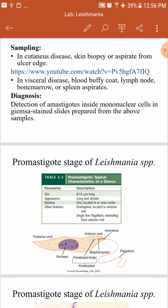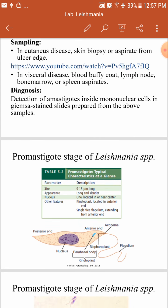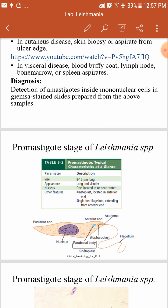However, spleen aspirate is not the best option. If we take an aspirate from the spleen of a patient with Leishmania donovani, we increase the risk of splenic rupture. Patients with Leishmania donovani have a hugely enlarged spleen — splenomegaly. So although spleen aspirate is very sensitive at almost 90%, it increases the risk of rupture.